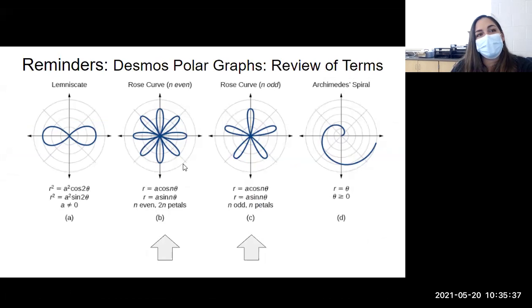How about C? Do you think C is a cosine rose curve or a sine rose curve? Got a couple of people in the chat. Yeah, it is sine. Because it does not have a petal lined up on the polar axis. It's shifted. The first petal is shifted up from the polar axis counterclockwise.